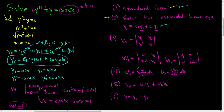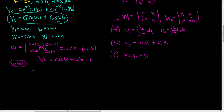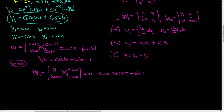I'll circle W equals 1. Now f(x) is secant x. For W1, replace the first column with 0 and secant x, keeping the second column as sin(x), cos(x). Computing the determinant: 0 times cos(x) minus sin(x) times sec(x) equals negative sin(x)·sec(x). Since sec(x) is 1/cos(x), this becomes negative sin(x)/cos(x), which is negative tan(x). So W1 equals negative tan(x).